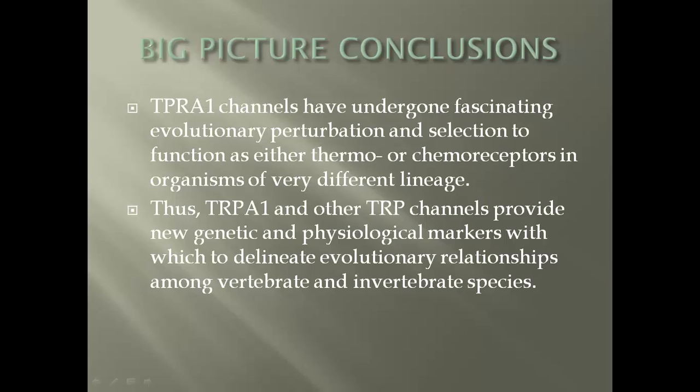The big-picture conclusions are that TRP A1 channels show a fascinating evolutionary perturbation and selection to function — they are either a thermoreceptor or a chemoreceptor in organisms of very different lineage, but not both, due to that inverse relationship. Furthermore, TRP A1 and other TRP channels provide new genetic and physiological markers with which to delineate evolutionary relationships among vertebrate and invertebrate species.